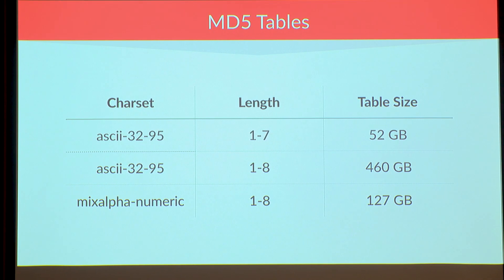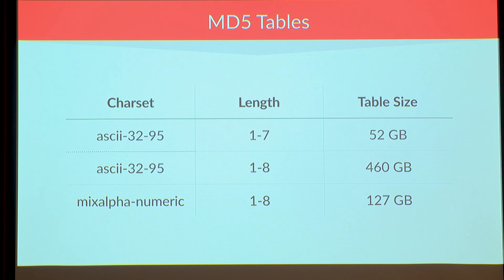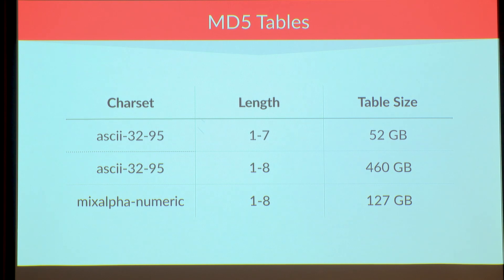We actually have a rainbow table in our code — a rather simple one because I didn't want to load your machines with a huge 127-gigabyte table. I have a database with a couple of hashes, and those are the hashes I have access to — let's say I stole them from somewhere. I press search and for each one, it tries to find the plain text equivalent. My database contains precalculated correspondences: this hash corresponds to this plain text. I just explode by line all the hashes, find them in the table, and output the result. It's just two lines of code — once you have access to the database it's rather simple. That's all you need to know about rainbow tables and how they work.